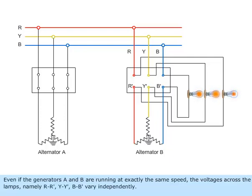Even if the generators A and B are running at exactly the same speed, the voltages across the lamps, namely RR', YY', BB', vary independently.